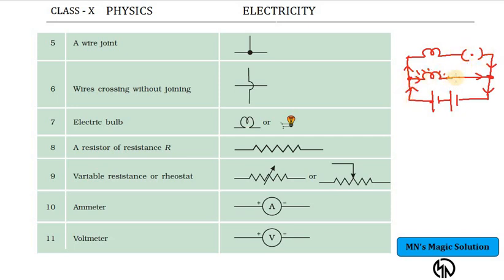This point that I am marking here is called a joint. At the joint, current will pass through and continue.